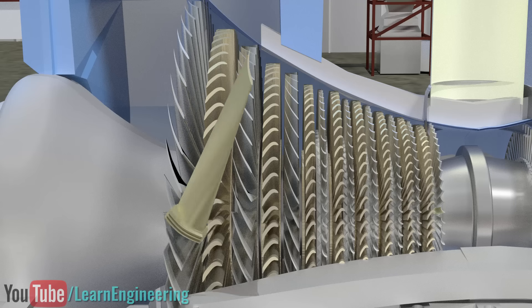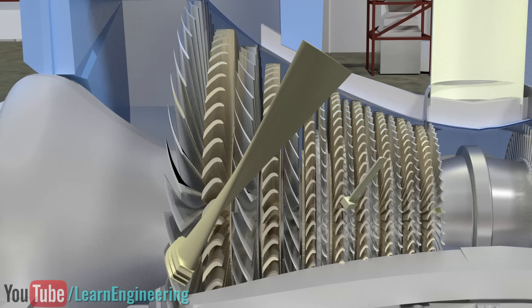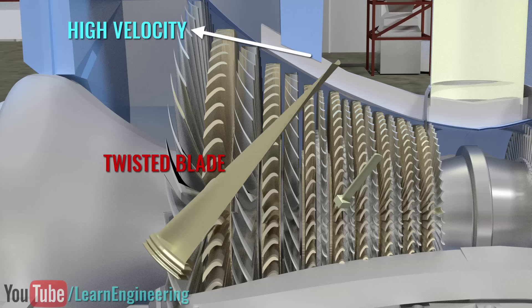You can see how long the last stage turbine blades are compared to the first stage blades. The tips of such long blades will have very high velocity compared to the root. A twist is given to it so that all blade cross-sections will remain at an optimum angle of attack.